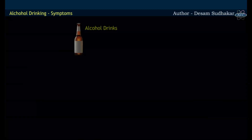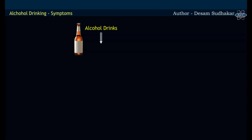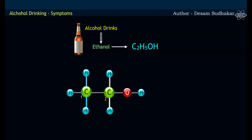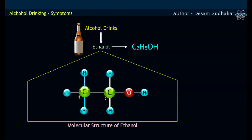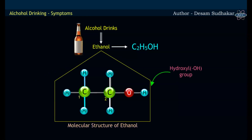All alcoholic drinks contain an organic compound called ethanol. Ethanol, with a molecular formula C2H5OH, has the molecular structure shown. It may be noticed that ethanol contains a hydroxyl or OH group.